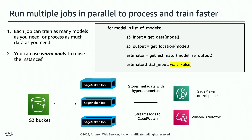Another handy feature is warm pools. Warm pools keep the instance warm after a job runs. So if your Python script breaks due to a typo, the instance stays there — you do a one-line code update, run the training job again, and it starts in seconds instead of waiting up to eight minutes for a restart. Warm pools are great if you're looping through lots of models and want to reuse those instances.